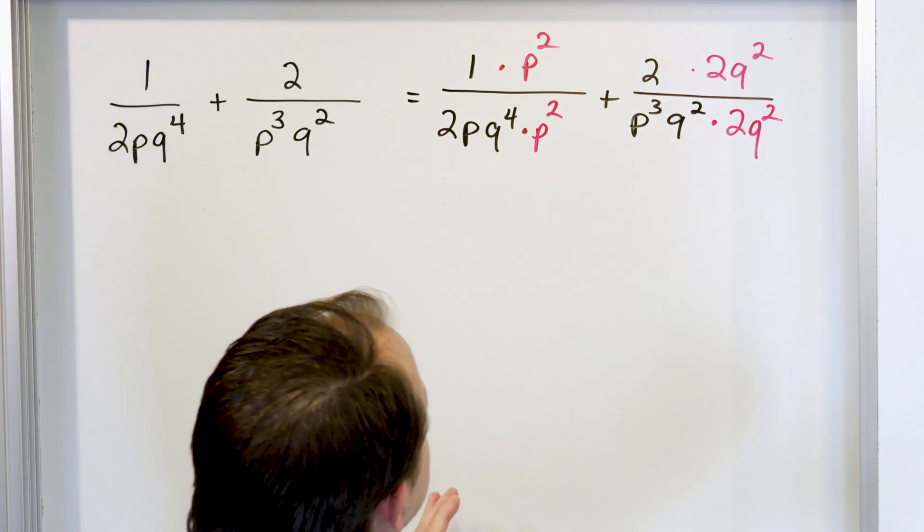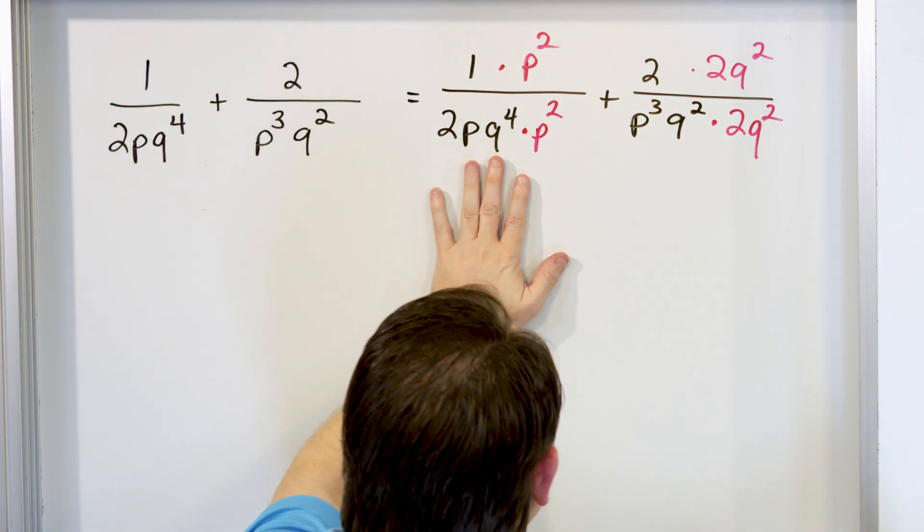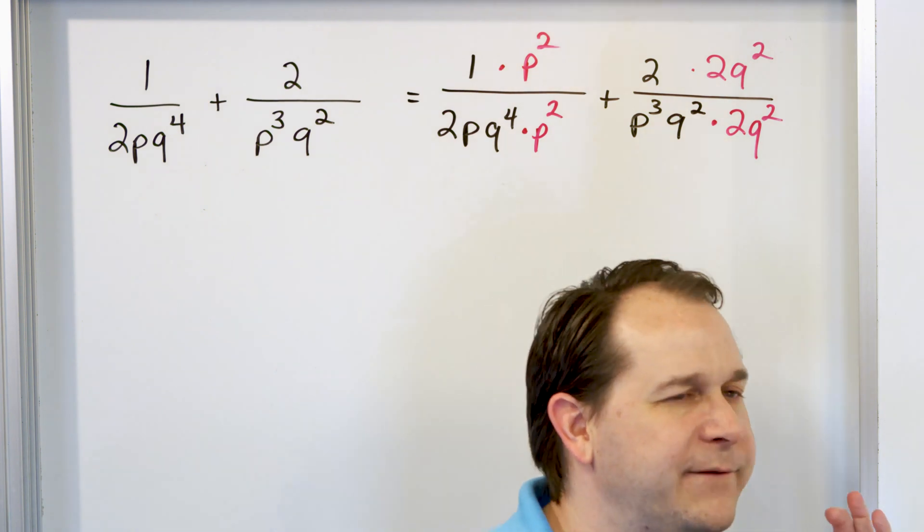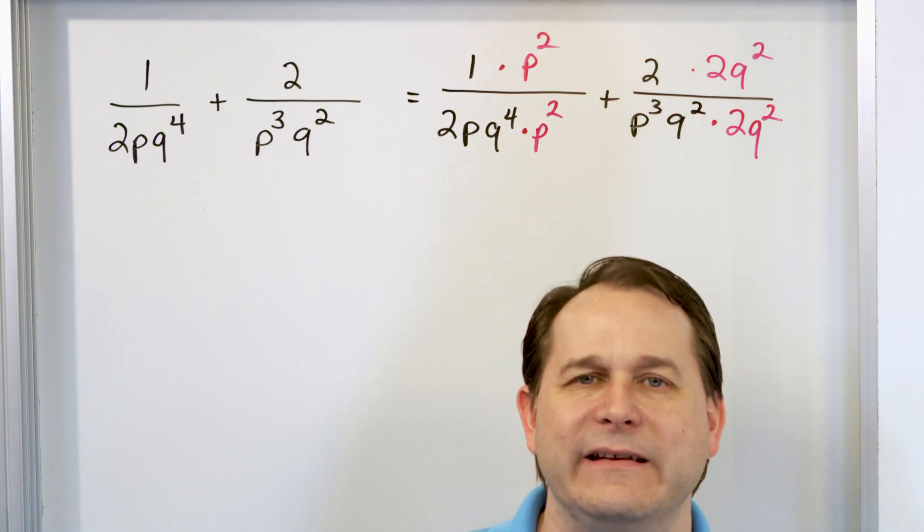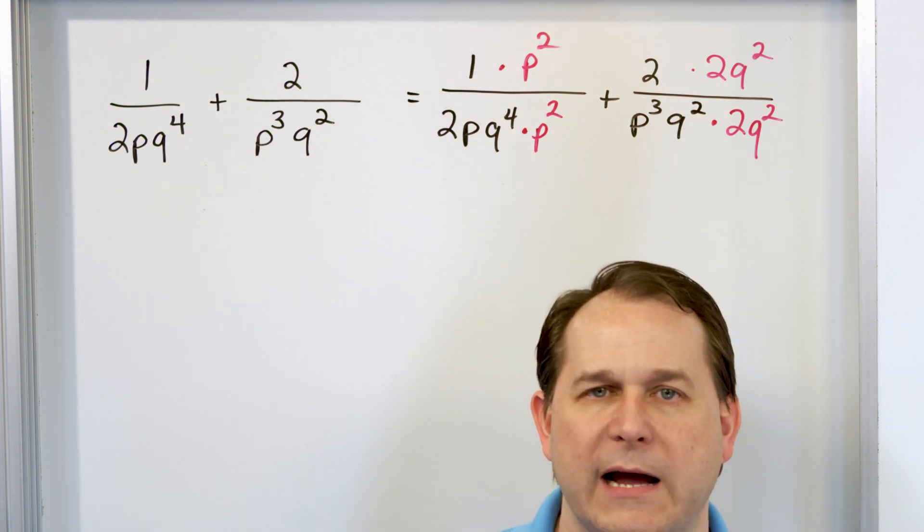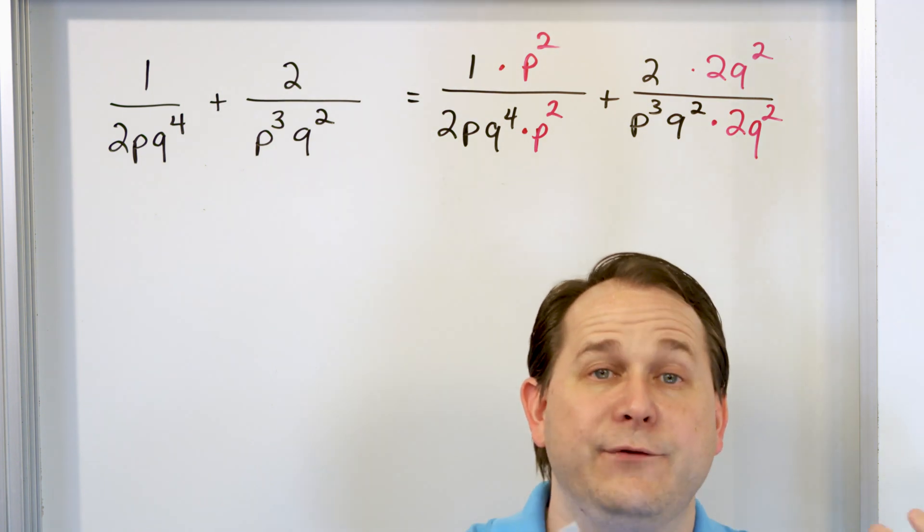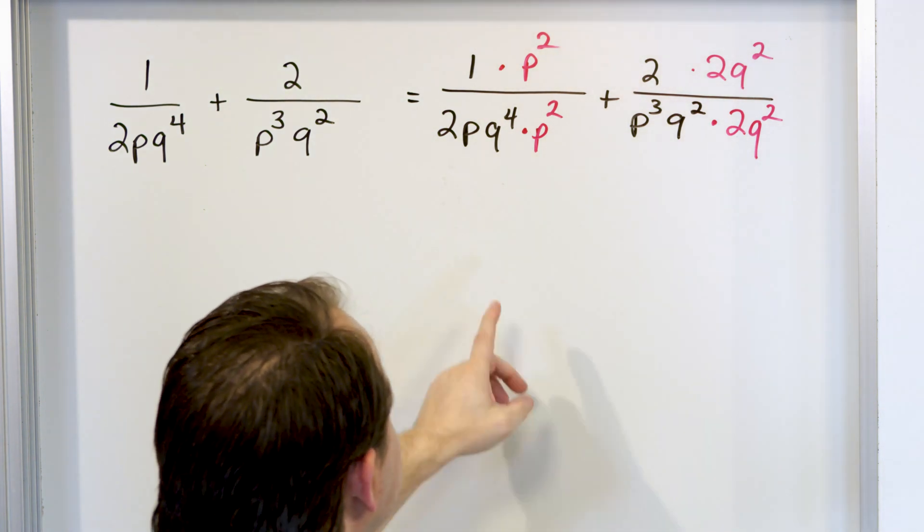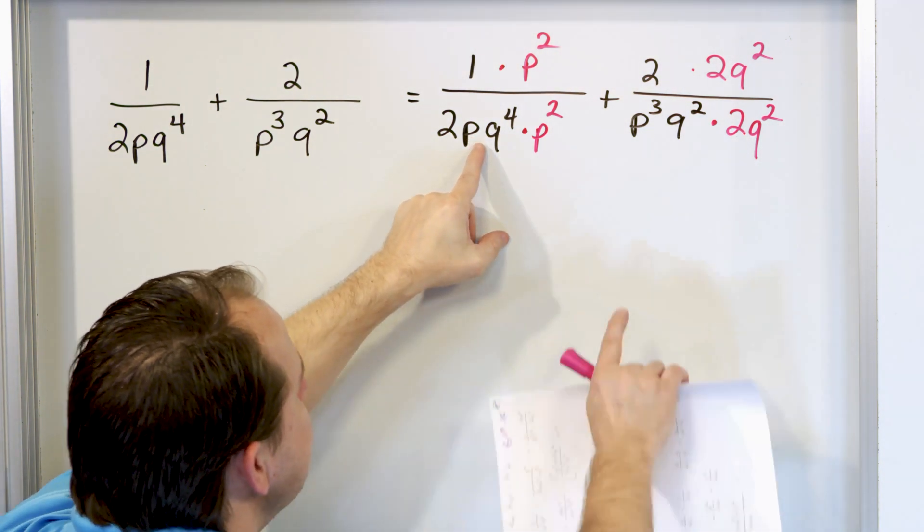What you have to do is look at what you're given in the first denominator, look at what you're given on the second denominator, and try to figure out the easiest, fastest way—what you have to multiply each denominator by to give you the same denominator altogether. And since I only had one p here, but three of them here, I said, let me multiply and give me two more p's for this denominator.